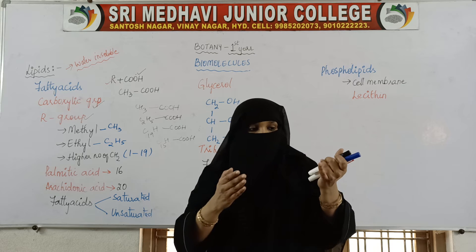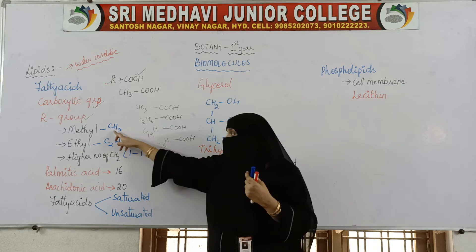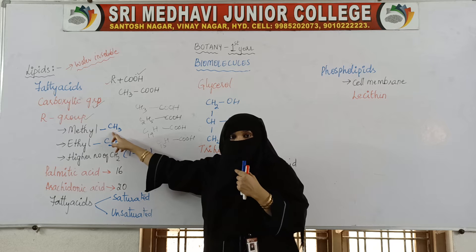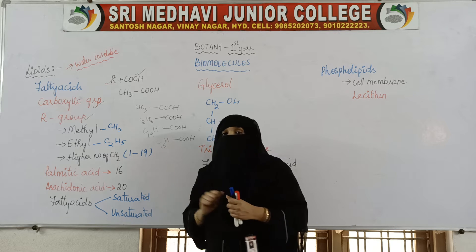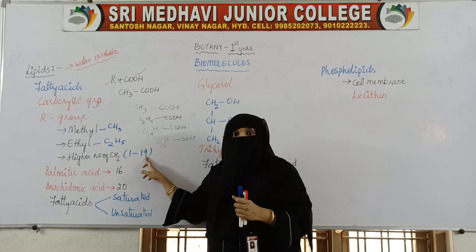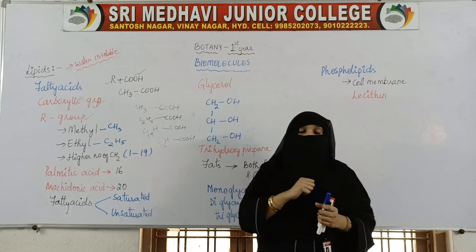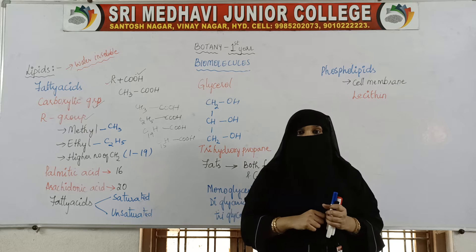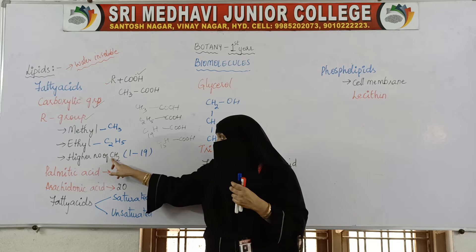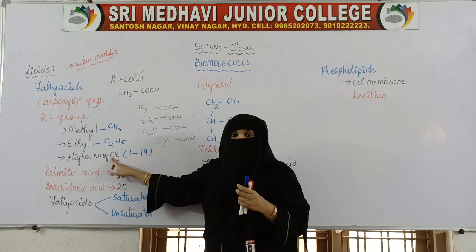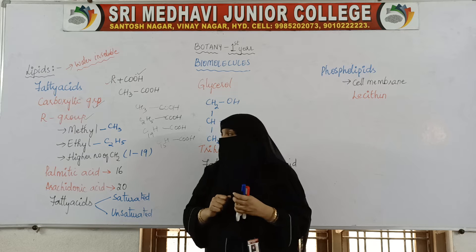The R group can be ethyl, methyl, or have one to nineteen carbons. It can have CH2 groups consisting of one to nineteen carbons. So the number of carbons in the hydrocarbon chain can vary from one to nineteen.